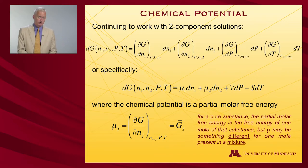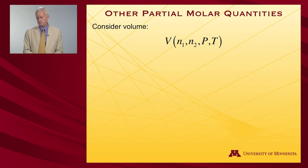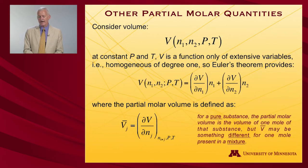There are other partial molar quantities that we can define equivalently. So consider volume. At constant pressure and temperature, volume is a function only of extensive variables. So it's homogeneous of degree one. And so Euler's theorem holds just as it did for free energy. I can again expand it emphasizing this constant pressure and temperature. They're parameters of the function. And I'll have a derivative expression times a variable expression.